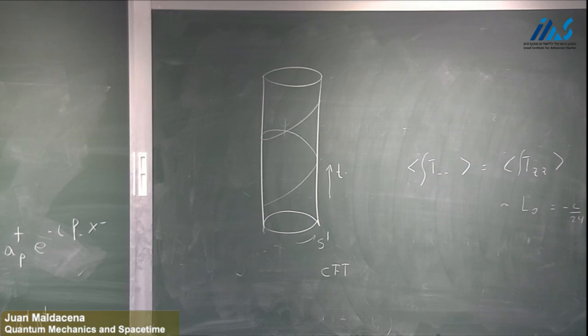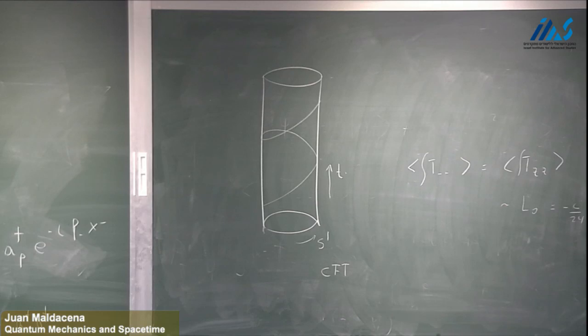A counterexample: consider a two-dimensional cylinder with a null ray going around the cylinder. In a two-dimensional CFT — a free fermion or free scalar — the expectation value of T_{--} integrated around the null circle is actually negative: minus c over 24. So ANEC is violated in this case.